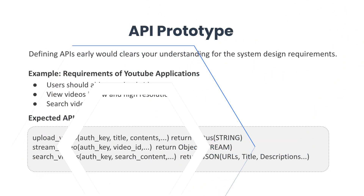The third step is APIs. Defining APIs early would clarify your understanding of the system design requirements and will also help you with data modeling. We can have SOAP or REST APIs to expose the functionality of our service. As we talked about the video streaming application in our requirements step, we can define our API prototypes according to features like upload, stream and search videos, along with required parameters and return types.